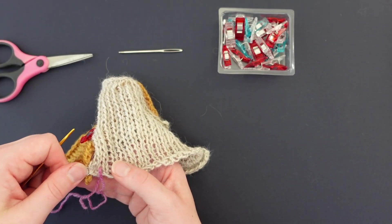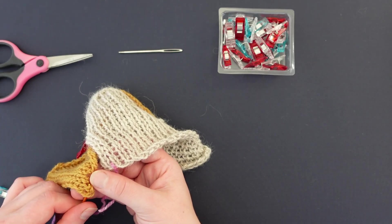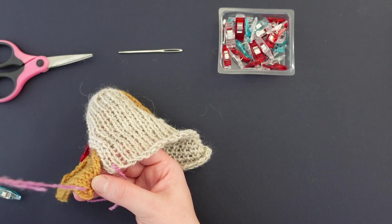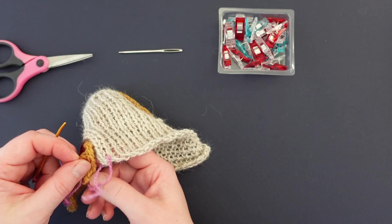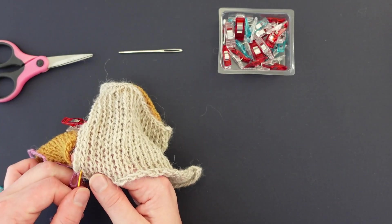What happens with the mattress stitch is everything turns to the back as you make these stitches and it's much easier to see what you're doing when you're working from the front side and get a nice clean result. So that's what we're doing.